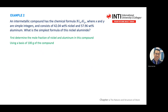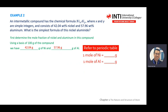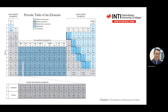From your first assumption of 100 grams, you have units in grams. You then refer to the periodic table to find x and y. From the periodic table: aluminum is 26.9 and nickel is 58.69. Capture these two values and go back to your solution.